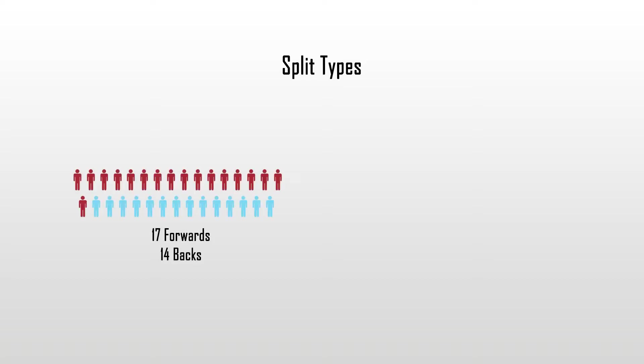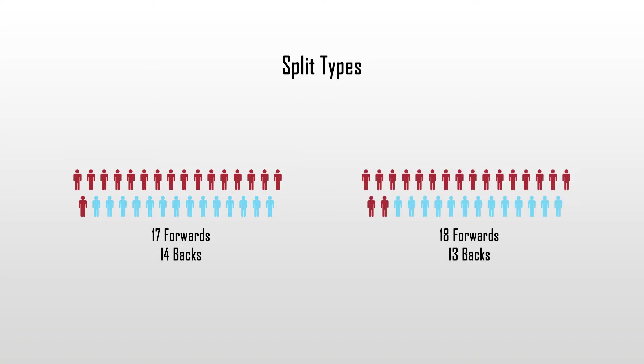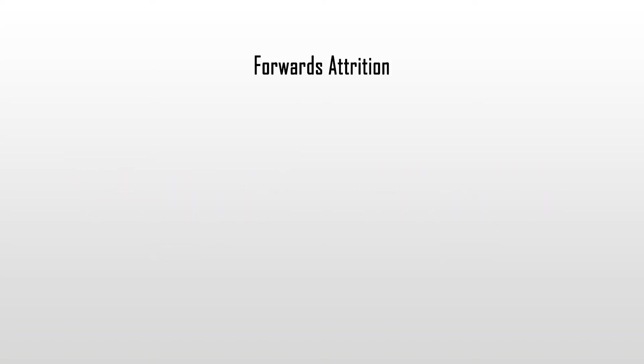The next thing to take into account is the split between forwards and backs. There are two options that teams will almost always go for: 17 forwards and 14 backs, or 18 forwards and 13 backs. As we can see, all World Cup squads are generally forwards-heavy because of two major factors.